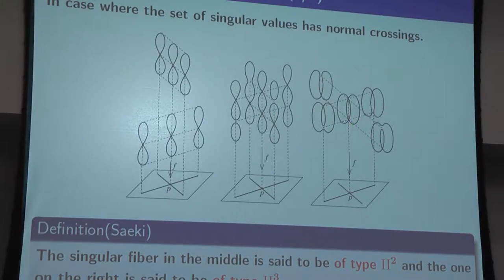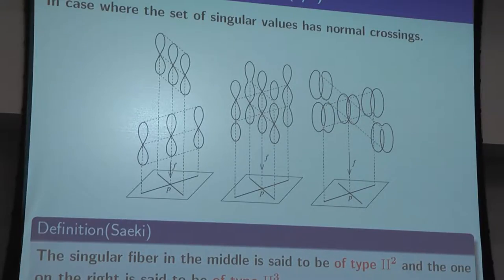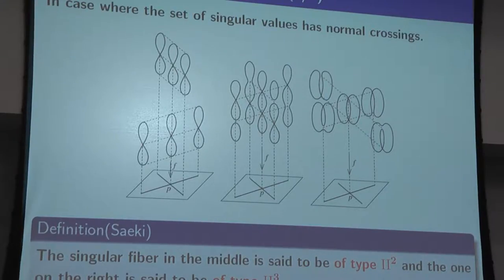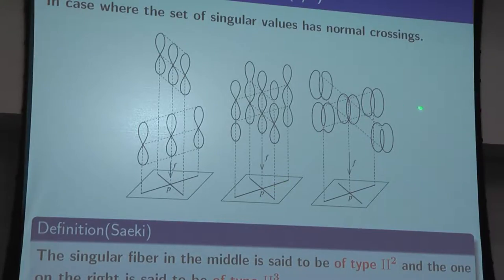According to Saito's textbook, there is a list of notation of singular fibers. This one is of type 2 and this one is of type 3 — it's just a name. In this talk, for convenience I say type 2 and type 3.